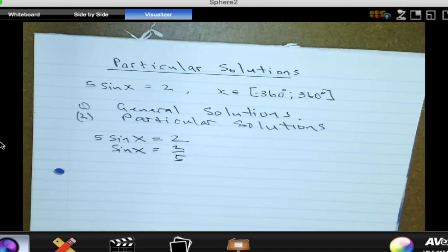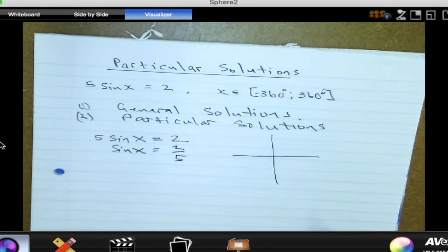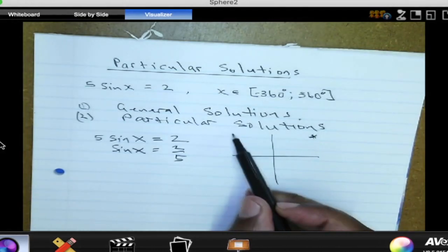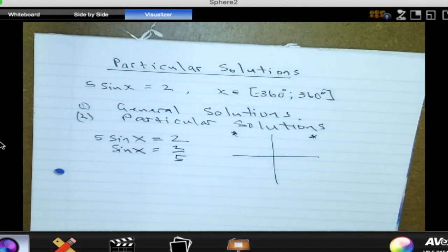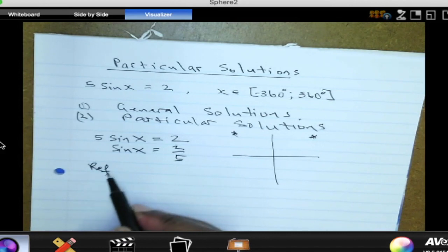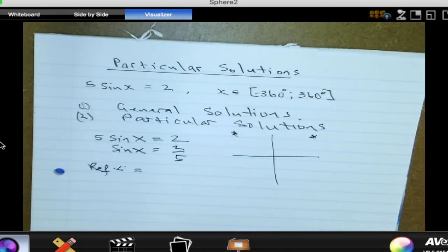Then we take note: sine of X is positive, and that means the value of X, the angle X, could be in quadrant 1 or in quadrant 2 because that is where sine of X is positive.